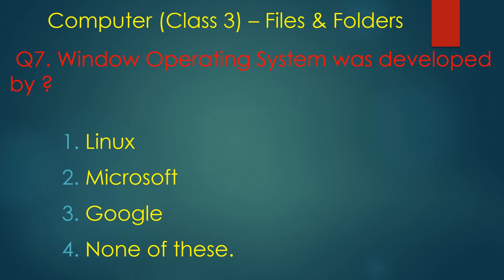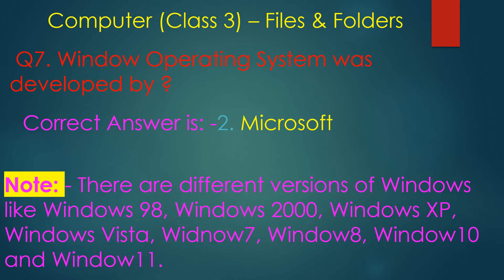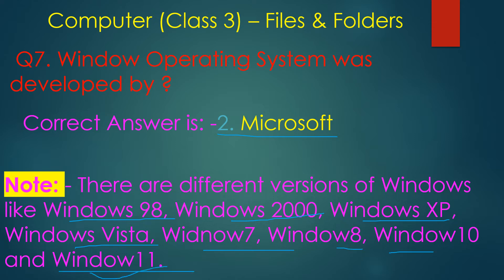Window operating system was developed by Microsoft. There are different versions of Windows: Windows 98, Windows 2000, Windows XP, Windows Vista, Windows 7, Windows 8, Windows 10, and currently Windows 11.